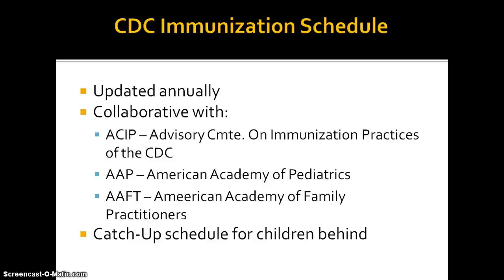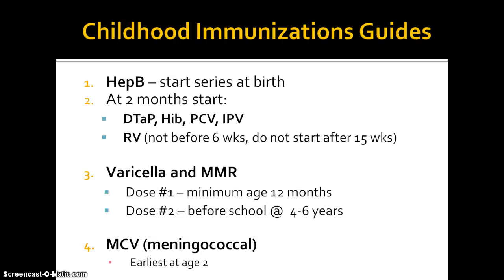The Centers for Disease Control Immunization Schedule is the schedule used by the American Academy of Pediatrics and American Academy of Family Practitioners. It includes a catch-up schedule for children who are behind on their vaccines. That schedule is in the London book on pages 1197 and 1198, and it's also posted in PDF form on the website. You can look at the CDC website or print your PDF copy in color, which is probably the best idea, then you'll have it to study.